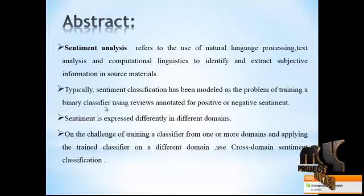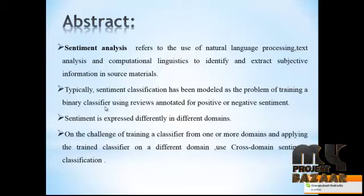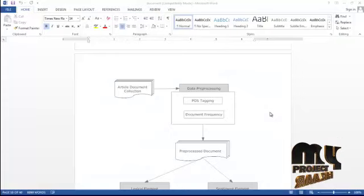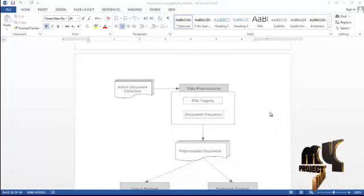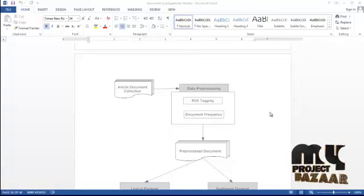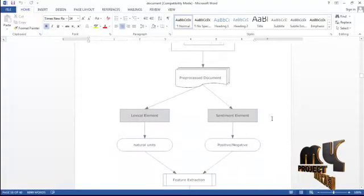After that we have to find out the positive and negative values, which determine the performance of the reviews. The input given is a domain article based on review datasets. In the dataset we do data pre-processing using POS tagging extraction and find the frequency of each document. Then we pre-process the document using two elements: lexical and sentiment analysis.